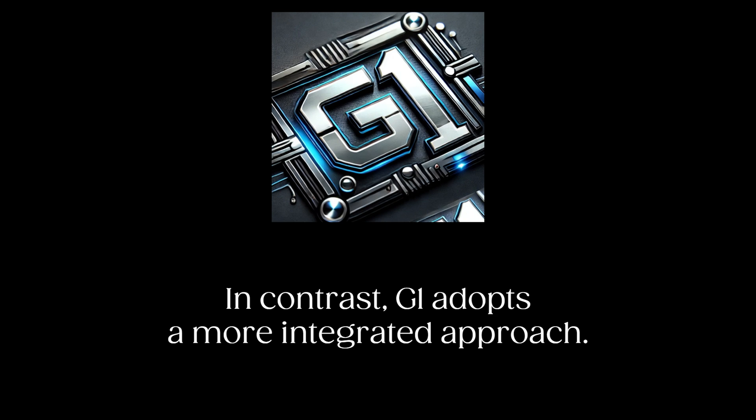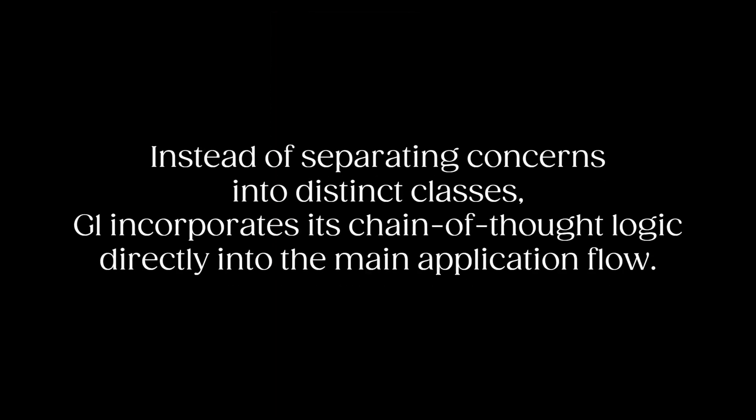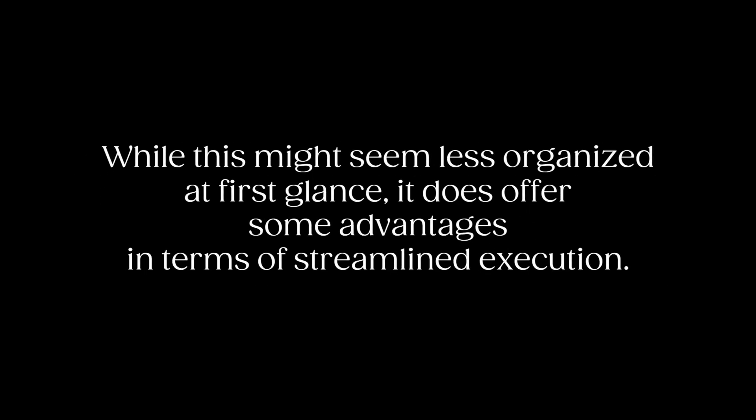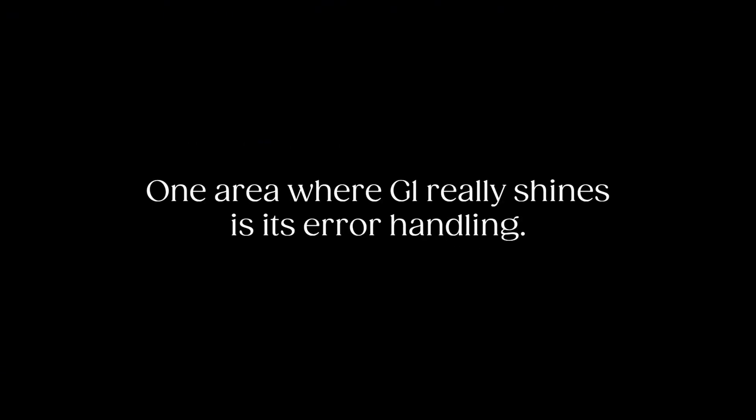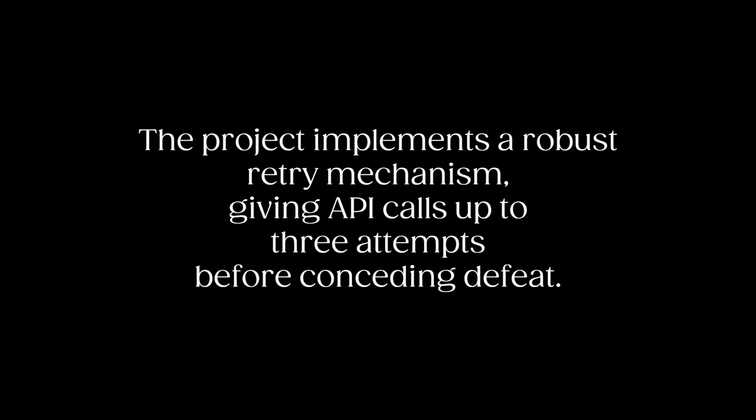In contrast, G1 adopts a more integrated approach. Instead of separating concerns into distinct classes, G1 incorporates its Chain of Thought logic directly into the main application flow. One area where G1 really shines is its error handling — the project implements a robust retry mechanism, giving API calls up to three attempts before conceding defeat. In a world of intermittent network issues and occasional server hiccups, this kind of resilience can be invaluable.